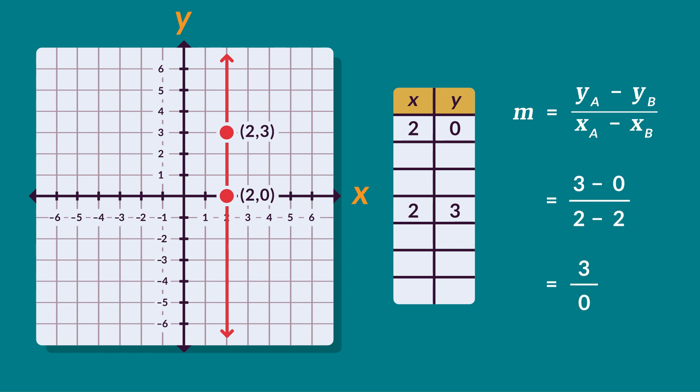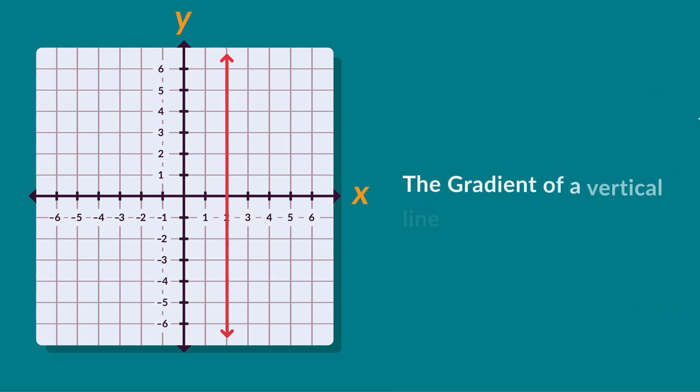And when we divide by 0, the answer is undefined. The gradient of a vertical line is always undefined.